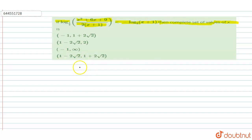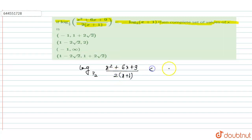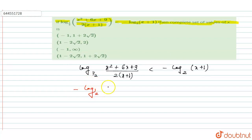Given equation is log base 1/2 of (x² + 6x + 9) / (2(x + 1)) and this value is less than minus of log base 2 of (x + 1). This equation can be written as minus of log base 2, using the property of log.